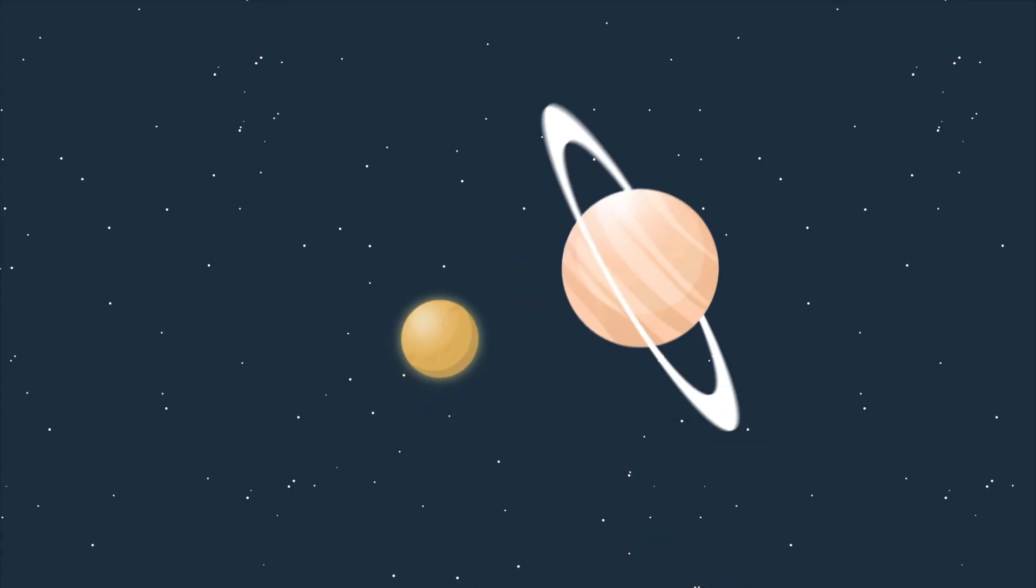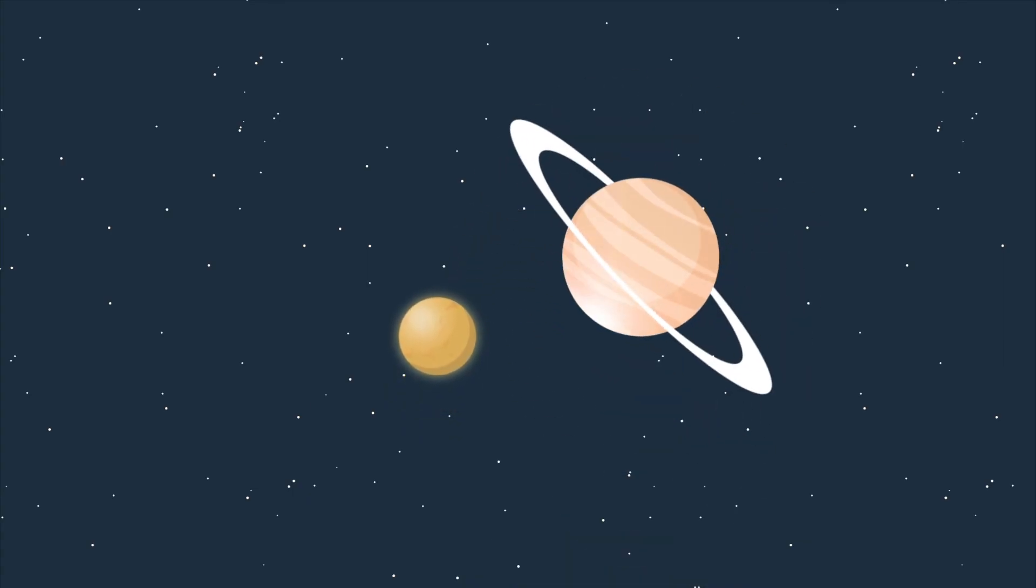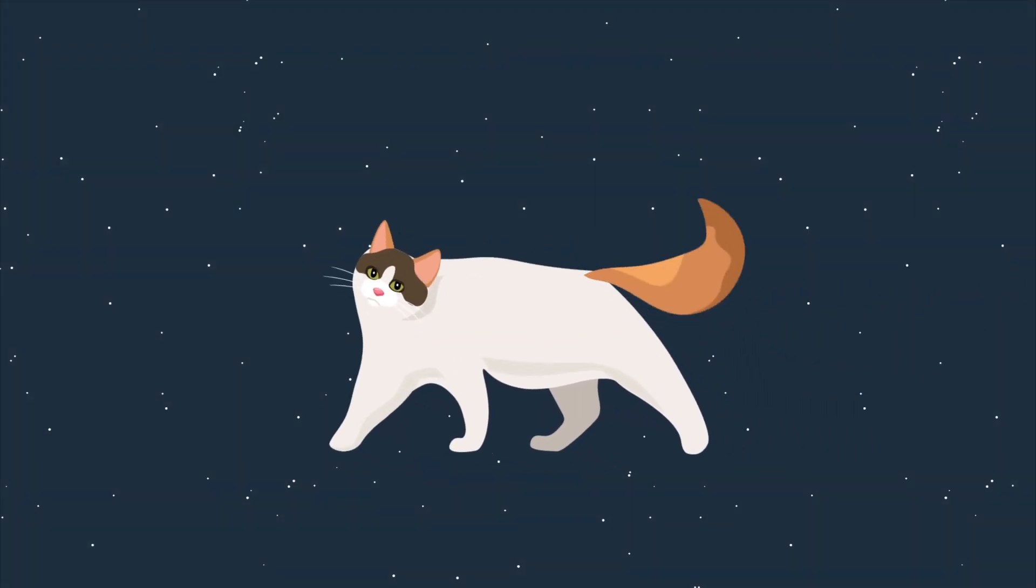Titan is the largest of Saturn's 82 moons. It's even bigger than the planet Mercury. It is, by scientific standards, a heckin chonker.